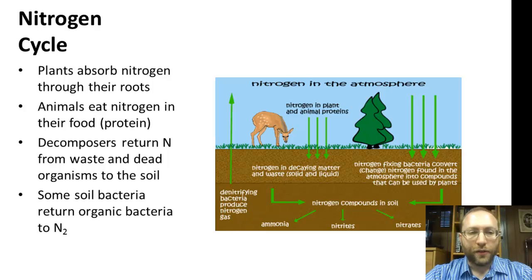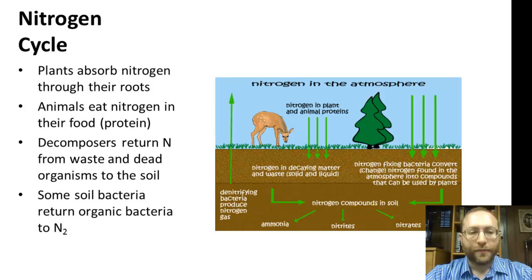Here's the whole nitrogen cycle. The main points are that plants absorb nitrogen through the roots, and animals then eat that nitrogen. Nitrogen is the chief component of proteins. Decomposers will then return the nitrogen from waste and dead organisms to the soil. Urine is basically nitrogen waste. And some soil bacteria will return organic nitrogen back into atmospheric nitrogen.